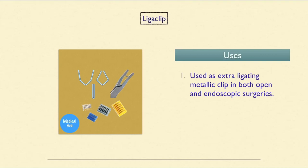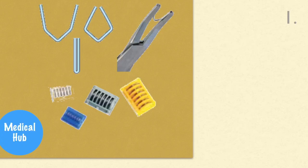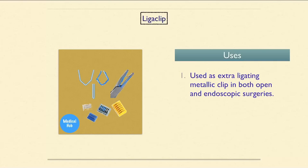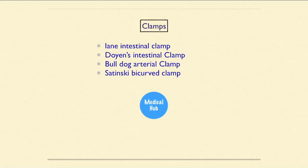These are ligaclips, kept through a clip applier instrument. They are used as extra ligating metallic clips in both open and endoscopic surgeries. Under clamps, we will discuss the Lane intestinal clamp, Doyen's intestinal clamp, bulldog arterial clamp, and Satinsky bicaval clamp.